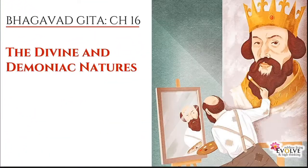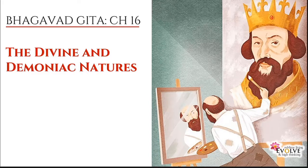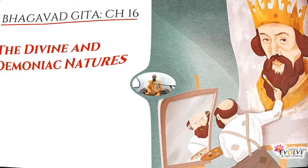The next chapter is chapter 16 — 'The Divine and the Demoniac.' In this world there are always two kinds of people: divine and demoniac. Krishna speaks about the qualities and characteristics of both, and simultaneously exposes the attitudes and behaviors that are detrimental or harmful for one's journey in spiritual life.